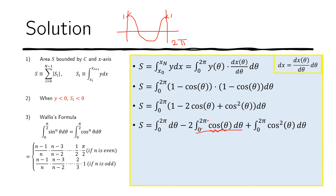If you recall a cosine function plotted from 0 to 2π, the area above the x-axis in the first half is positive, and the area below in the second half is negative. In fact, the positive and negative regions are equal in magnitude — they cancel out exactly. So the integral of cosine from 0 to 2π equals 0, and that part of the integration vanishes.